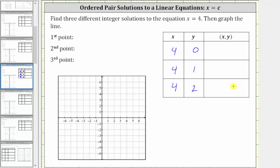And now we have three ordered pair solutions that satisfy the equation x equals four. We have the ordered pair (4, 0), the ordered pair (4, 1), and the ordered pair (4, 2). Each ordered pair solution represents a point on the graph of the line on the coordinate plane. Let's also record these ordered pairs as the three points.